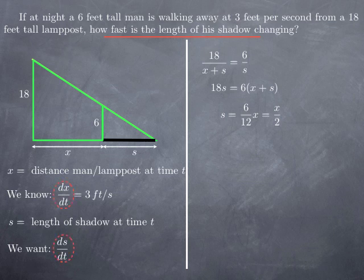From this, we want to deduce a relationship between the rates of change of x and s. To do that, we differentiate both sides with respect to time. And in this case, it's very simple, because we get the derivative of s on the left hand side and on the right hand side just one half of the derivative of x.